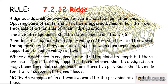Junctions of ridge boards or hip or valley rafters shall be strutted where the hip or valley rafter exceeds 5 meters in span, or where under purlins are supported off hip or valley rafters. Where a ridge board is required to be strutted along its length but there is insufficient strutting support, the ridge board shall be designed as a ridge beam for a non-coupled roof, or alternative provisions made for the full support of roof loads. An example of an alternative would be the provision of a tie bolt truss.